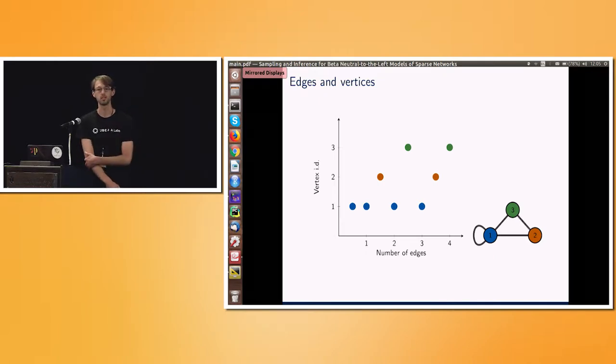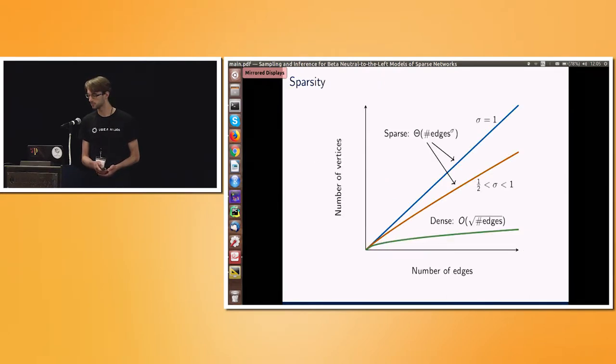And one feature that people are really interested in here is the number of vertices against the number of edges. So those vertices only come in when they're discovered, connected to. And we're interested in the asymptotics.